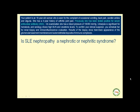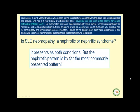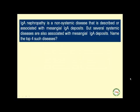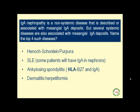Is systemic lupus nephropathy a nephrotic or nephritic syndrome? It presents as both, but the nephrotic pattern is by far the most commonly presented pattern. IgA nephropathy is a non-systemic disease associated with mesangial IgA deposits, but several systemic diseases also present with mesangial IgA deposits. The top four such diseases include Henoch-Schönlein purpura, which often affects young males, and systemic lupus erythematosus — noting that some SLE patients may have IgA deposits.